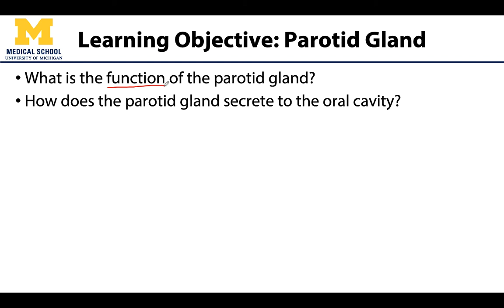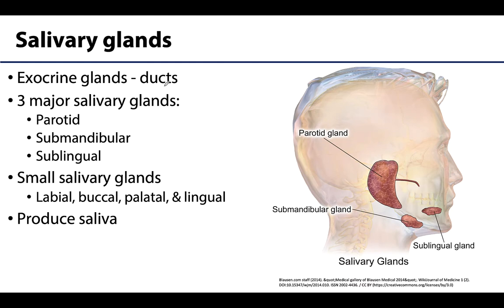As the parotid gland is an exocrine gland, it will have an important duct that will allow transport to the oral cavity. Salivary glands are examples of exocrine glands, which produce and secrete substances onto an epithelial surface by way of a duct. Remember how this differs from an endocrine gland like the thyroid or the parathyroid glands, which secrete hormones directly into the bloodstream — so no ducts.